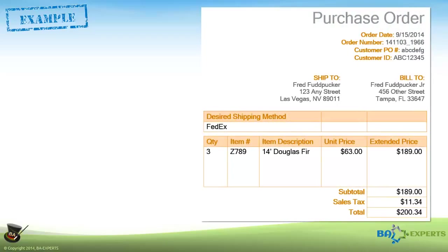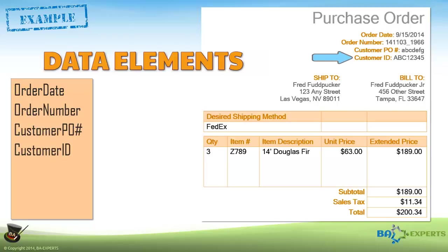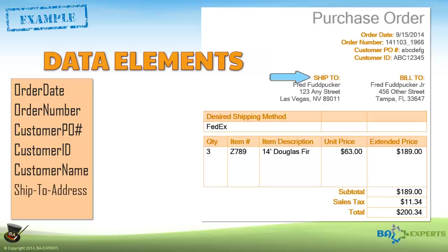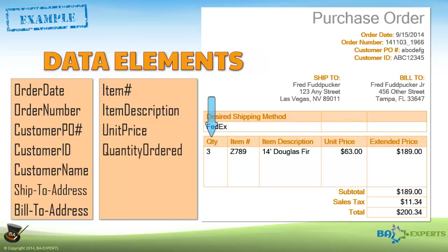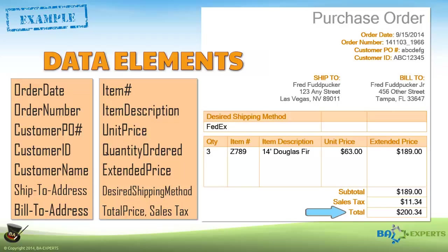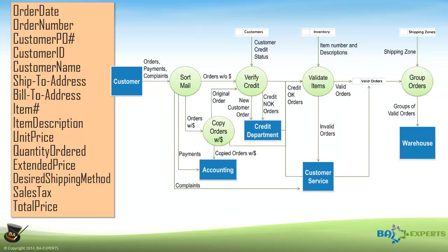Let's look at a concrete example. This is the order form that our example uses. If I ignore the physical layout and look only at the individual data elements on the form, I get this list: Order Date, Order Number, Customer PO Number, Customer ID, Customer Name, Ship to Address, Bill to Address, Item Number, Item Description, Unit Price, Quantity Ordered, Extended Price, Desired Shipping Method, and Total Price. This list represents the minimum data content for every data flow on my diagram that contains the word "Order" — e.g., Orders With Payments, Orders Without Payments, New Customer Order, etc. It's also the data content for the data store "valid orders."